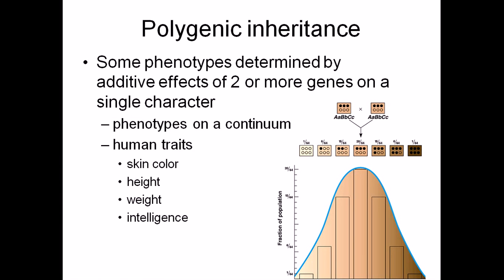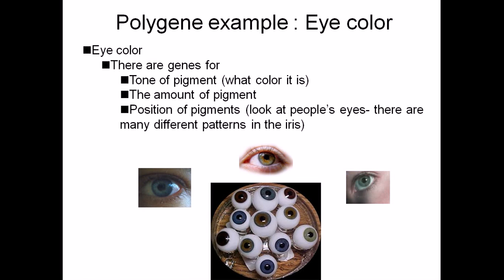Phenotype is a continuum, as you can see. Examples are skin color, height, weight, intelligence, and behavior. All of these things are controlled by polygenic inheritance among human species.